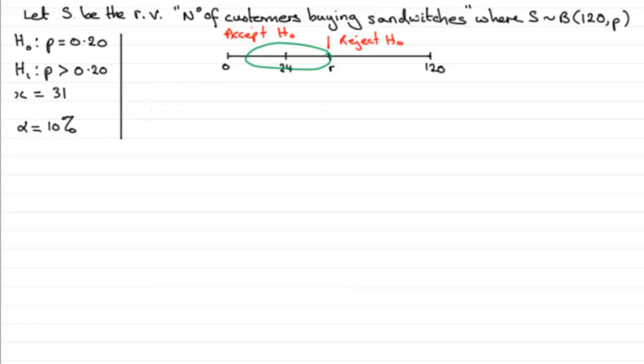To do that I'm going to write that we reject H₀ if the probability that S is greater than or equal to R, given that the null hypothesis is true, that is P equals 0.20, turns out to be a value less than 10%, 0.10.